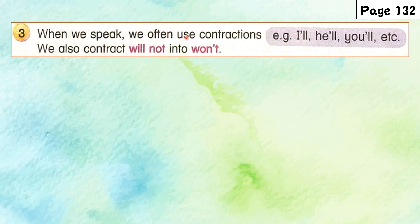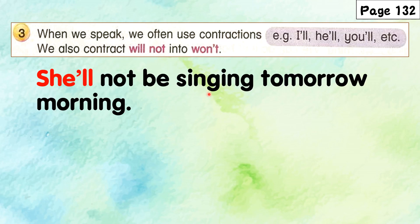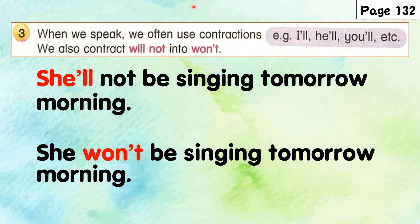When we speak, we often use contractions. For example, 'she will not' becomes 'she'll not be singing tomorrow morning.' We also contract 'will not' into 'won't': she will not be becomes she won't be singing tomorrow morning.